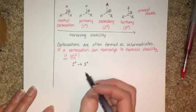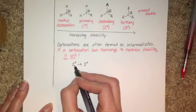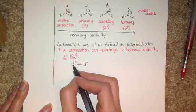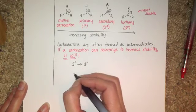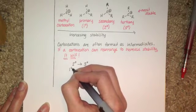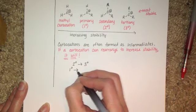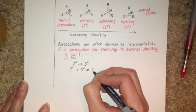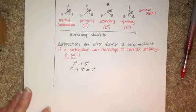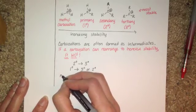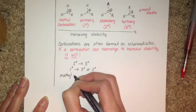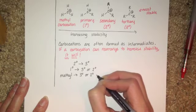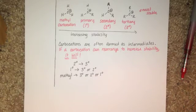And we're going to talk in a second about how the rearrangement occurs. But because a tertiary carbocation is more stable, a secondary carbocation is going to attempt to turn itself into a tertiary. If you form a primary carbocation, it's going to try to rearrange to form a tertiary carbocation or a secondary carbocation, anything that's better than primary. If you have a methyl carbocation, it's going to attempt to rearrange to form a tertiary or a secondary or a primary, anything that is better.